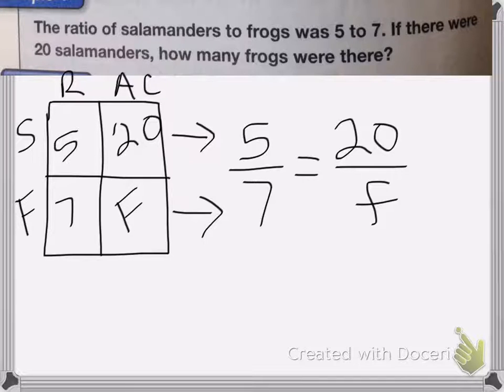This one, we can actually just find the constant factor. So I can think five times what equals 20. So five times four equals 20. I've multiplied the top by four, I can multiply the bottom by four. So seven times four is equal to 28.